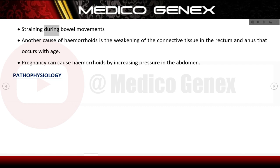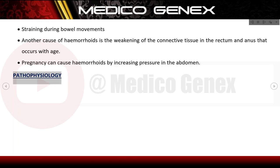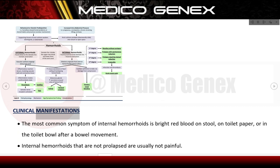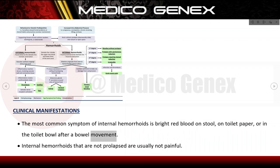Another cause of haemorrhoids is the weakening of the connective tissue in the rectum and anus that occurs with age. Pregnancy can also cause haemorrhoids by increasing pressure in the abdomen. The most common symptom of internal haemorrhoids is bright red blood on stool, on toilet paper, or in the toilet bowl after a bowel movement.